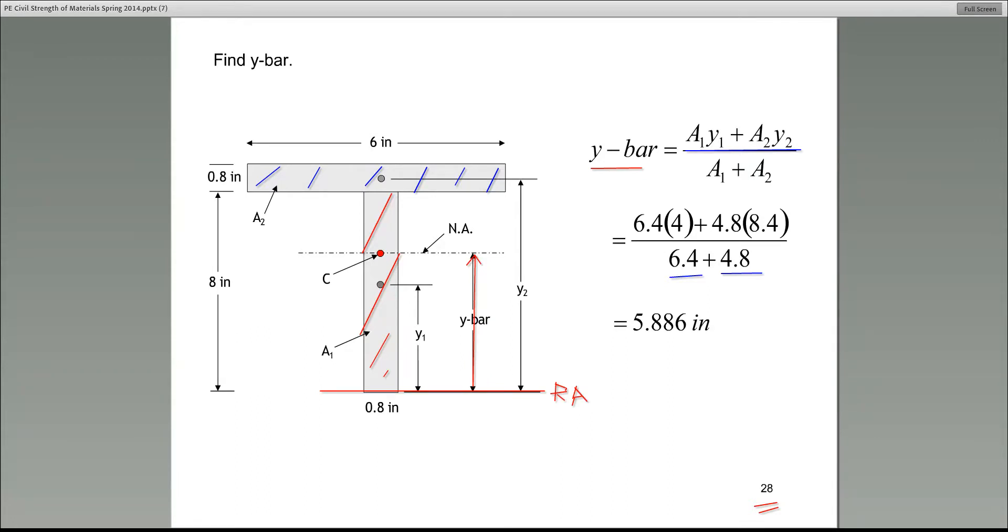The numerator, however, as you can see, it is A1, which is 6.4 times a distance. And that distance is called Y1. This is where things go wrong. If anything goes wrong here, that's where it goes wrong. What's Y1 equal to? Guys, please pay attention. Y1, in this case, is the distance between the centroid of area 1 measured from the reference axis. Always measured from the reference axis. In this case, it's 4.